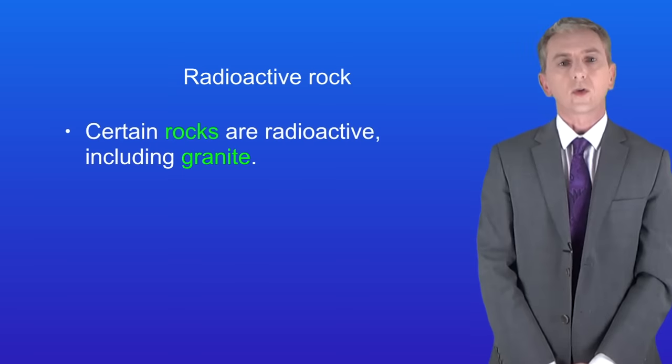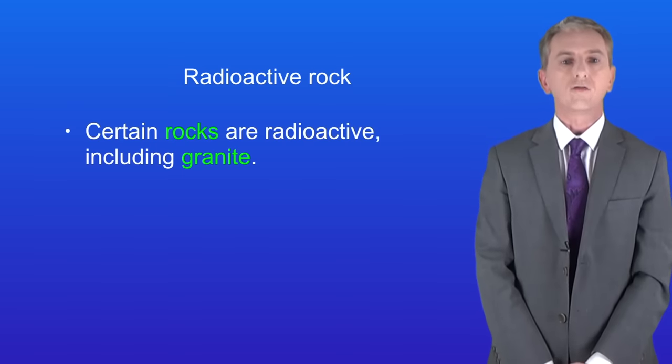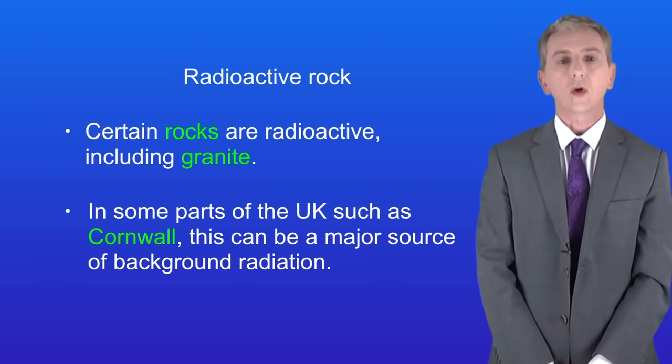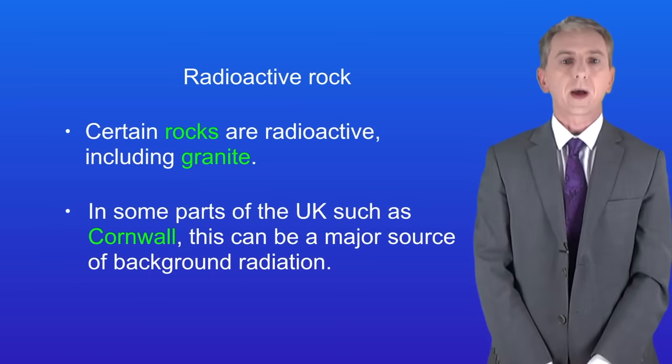The first natural source of background radiation is radioactive rock and we find that in the ground. This includes granite. In some parts of the UK such as Cornwall this can be a major source of background radiation.